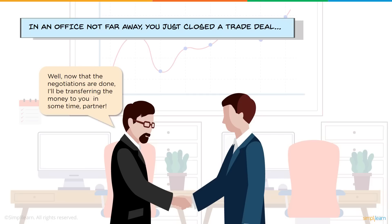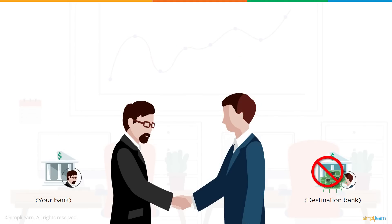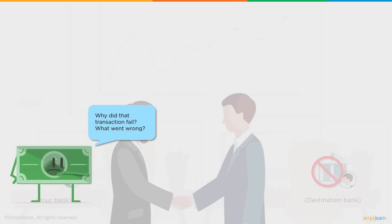Let's take an example of a money transaction which we all do generally. Here we have someone who wants to transfer money from his account to his partner's account with whom he has done a trade deal. In a typical banking transaction, something can go wrong and the money does not get deposited and gets back to your account. What could be the problem? Why did that transaction fail and what went wrong?